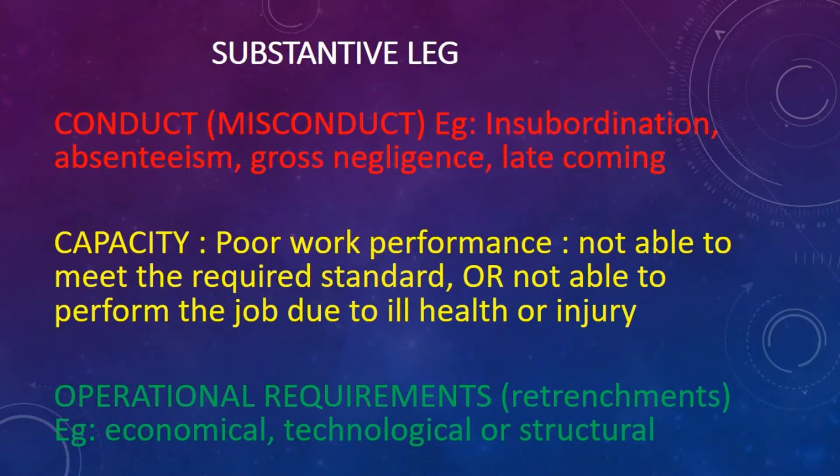Now I'm going to get into exactly what the different categories of labor law issues are that arise most commonly. The first one has to do with conduct, which deals with things like insubordination, absenteeism, gross negligence, or late coming. Then you move into the category of capacity — issues of poor work performance, where an employee is not able to meet the required standard, or they're unable to perform their job because of ill health or injury. The third category is retrenchment, otherwise known as operational requirements.